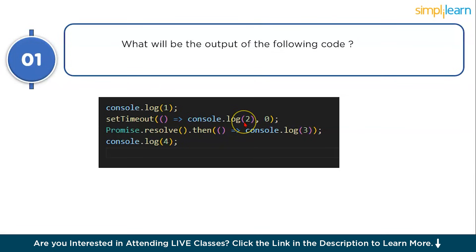setTimeout with console.log(2) and a delay of 0 schedules the callback to run in the macro task queue. It executes after the current execution stack and all micro tasks are completed. Promise.resolve().then(console.log(3)) schedules a callback in the micro task queue — promise jobs always run before macro tasks like setTimeout. Then console.log(4) is synchronous.